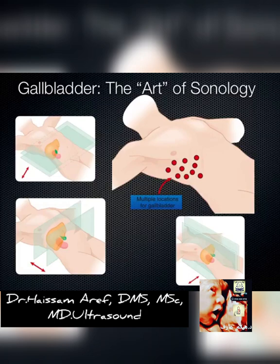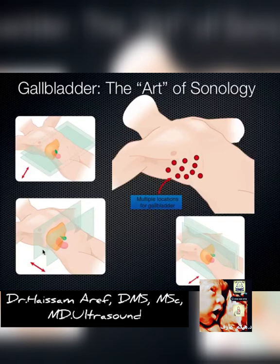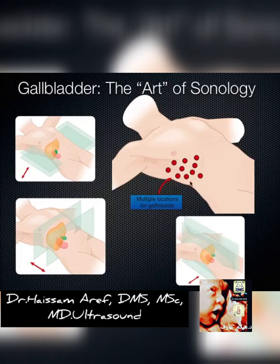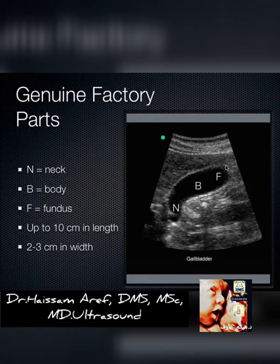The gallbladder can be found in many different places, planes, and locations — it can be very elusive. Sometimes you get a better view going coronally X minus 7, sometimes transversely sub-xiphoid, sometimes in a sagittal plane tweaked slightly to the patient's left. In older patients everything starts to sag and so does the gallbladder. But it always has factory parts: a fundus, a body, and a neck — sometimes called Hartmann's pouch — with twists and turns you can follow with ultrasound.